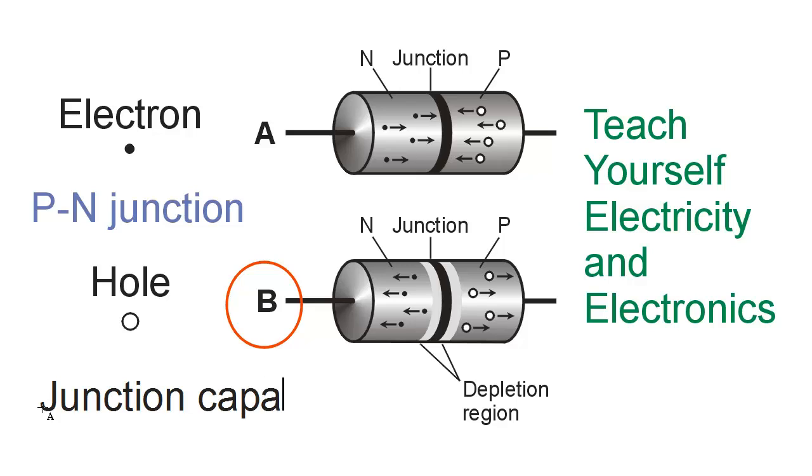As we increase the reverse bias voltage, this depletion region gets wider, increasing the gap between the plates of the capacitor. That would be the p- and n-type materials themselves. So the junction capacitance goes down. As we reduce the reverse bias, the junction capacitance goes up.